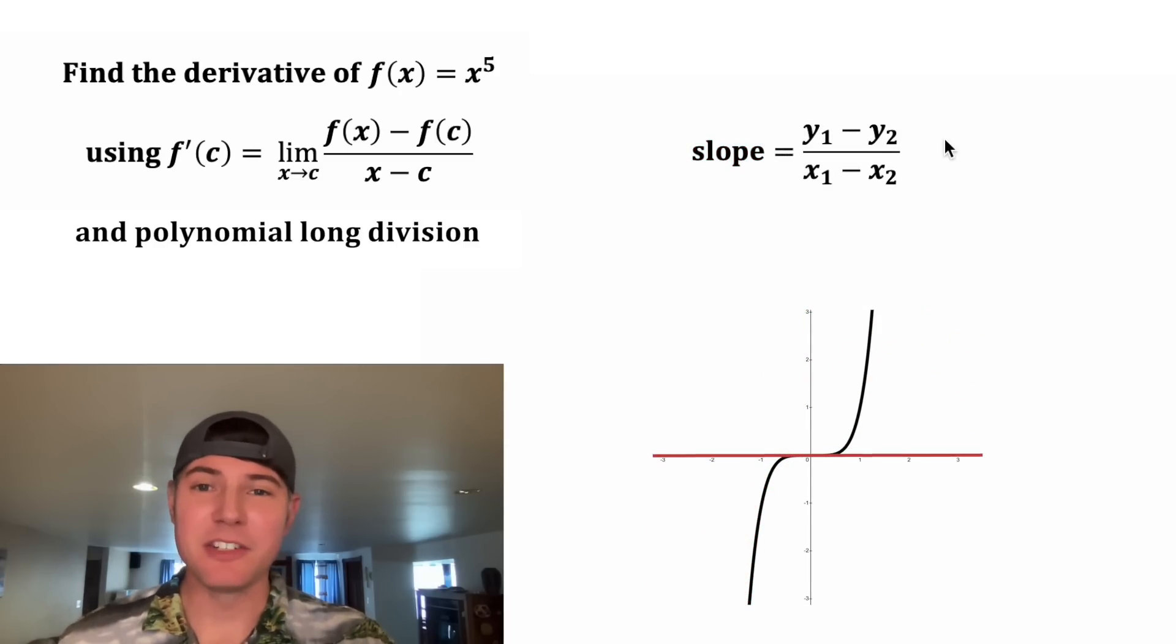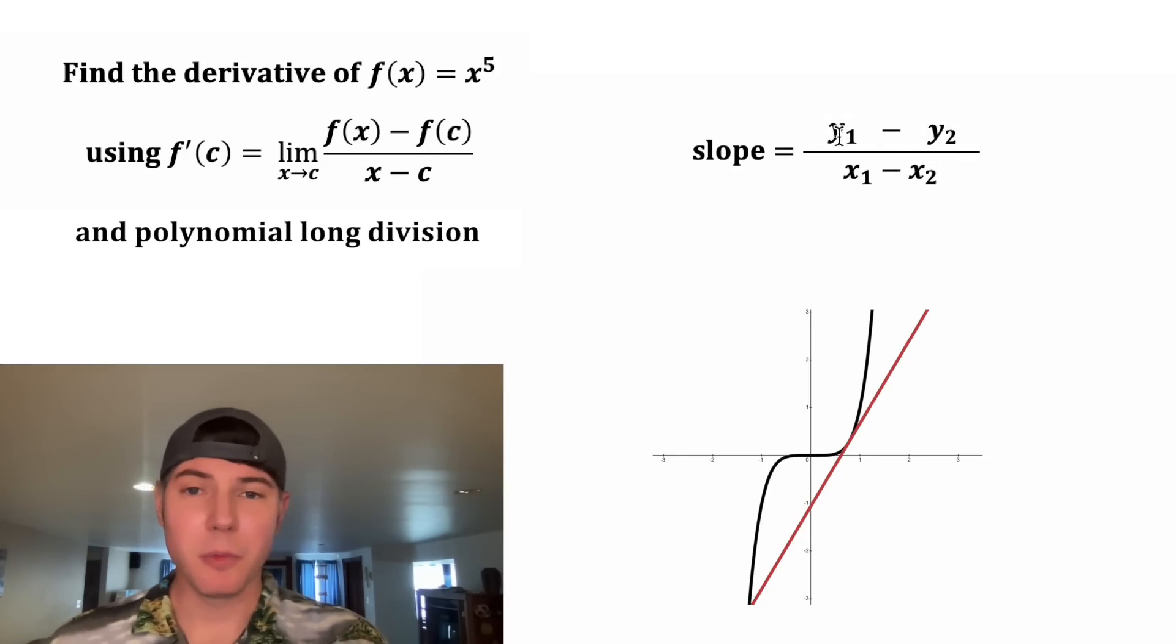So the way this is derived is kind of interesting. The slope is equal to the rise over run, or in other words, (y₁ - y₂)/(x₁ - x₂). And then we can rewrite y₁ as f(x₁) and y₂ as f(x₂).